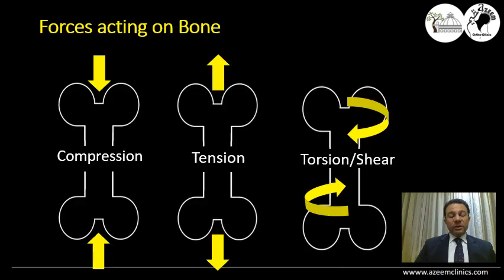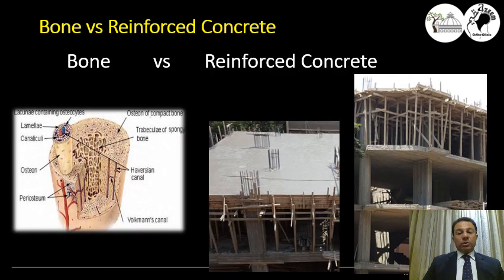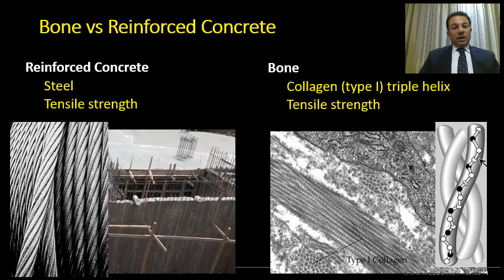Our bone is subjected to different forces from different directions — mainly compression, tension, and torsion. For simplification, we compare bone to reinforced concrete to understand how the bone materials act as a composite structure. Just as steel wires provide tensile strength in reinforced concrete, if we look under the microscope, the collagen protein of the bone — present in a triple helix structure — looks exactly like the tensile wires, providing the tensile strength.